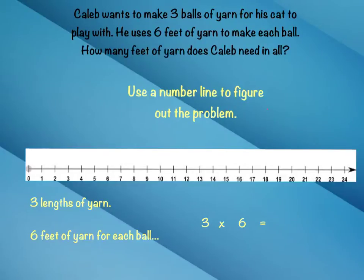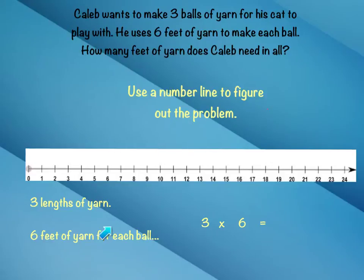So to figure this problem out, we're going to use another way. We've used equal groups already in earlier lessons, and we used repeated addition. So now we're going to look at a number line and how to use a number line to solve this problem. We know that he needs three lengths of yarn, and he needs six feet for each ball. If he wants three balls, he needs three lengths of the yarn. So we're going to jump on our number line six places for one ball of yarn. One ball of yarn needs six feet of yarn. So there's one of our balls.